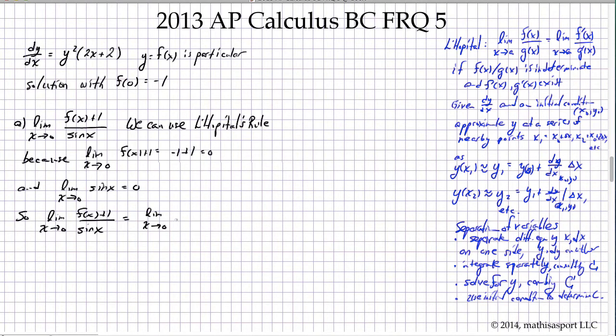Applying L'Hôpital's rule, we can say that the limit as x goes to 0 of f(x) + 1 over sine of x is the same as the limit as x approaches 0 of f'(x) over cosine of x. Now f'(x) we know we can plug in 0 for x and negative 1 for y. We get negative 1 squared times 2 times 0 plus 2 all over the cosine of 0 is 1, and so that's 2.